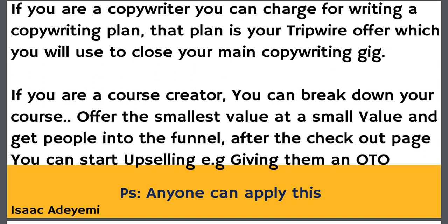I have clients who entered my funnel through this tripwire strategy. For example, I have a gig for creating a coupon or discount code for clients that costs just fifty dollars. As easy as it looks, I complete the coupon code within five to seven minutes. When people purchase that gig, I deliver successfully and gain their trust. Someone who creates a coupon code definitely wants to use it for marketing, so I then upsell them with my main gig — email marketing. Since I already have their trust, it's much easier to convert them.